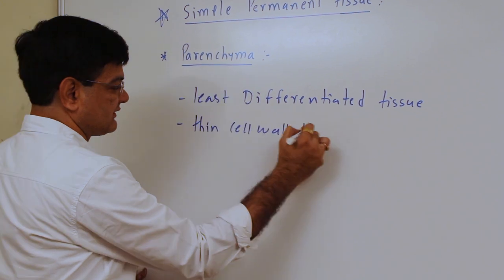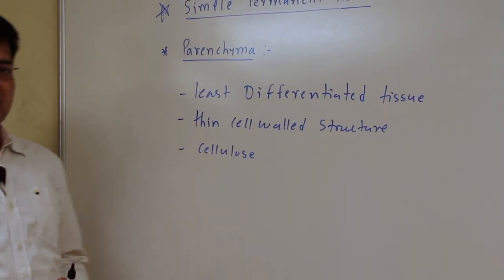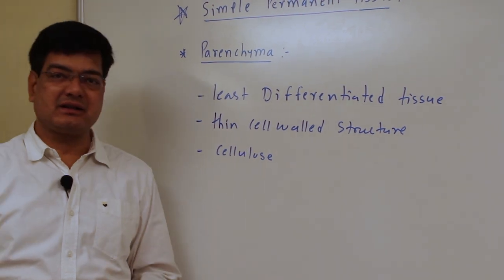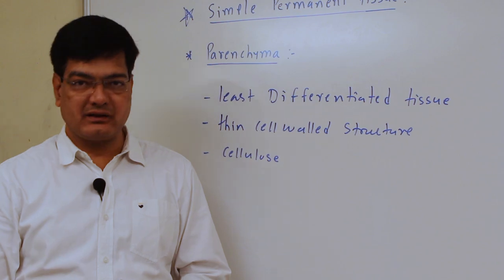Parenchyma is a thin cell wall structure which is formed of cellulose. Parenchyma tissue has similar characteristics to that of meristematic tissue except the ability of cell division.